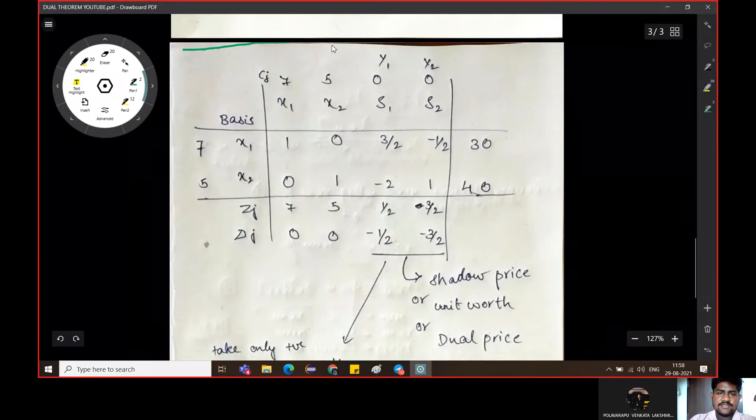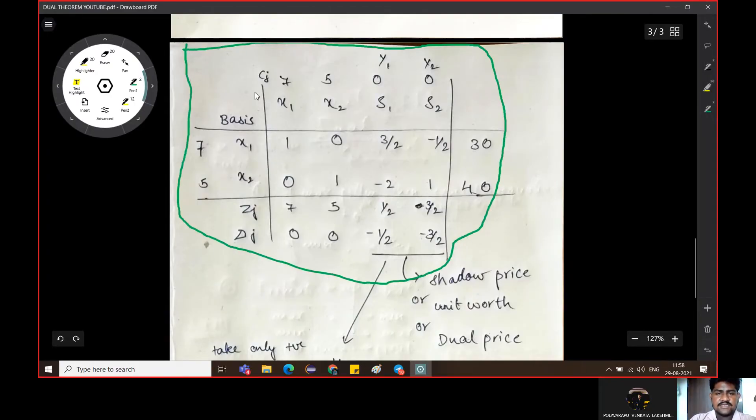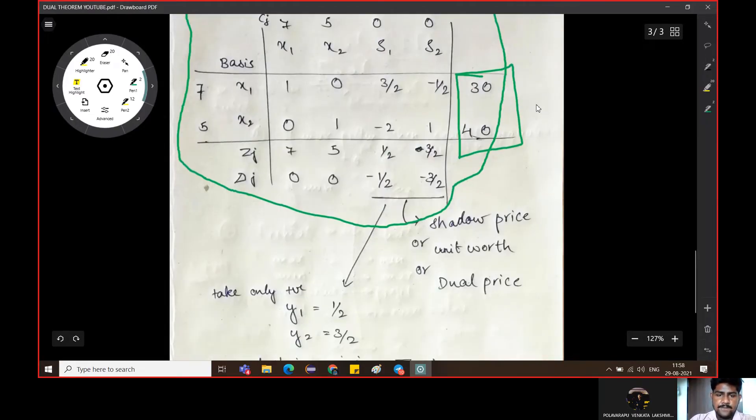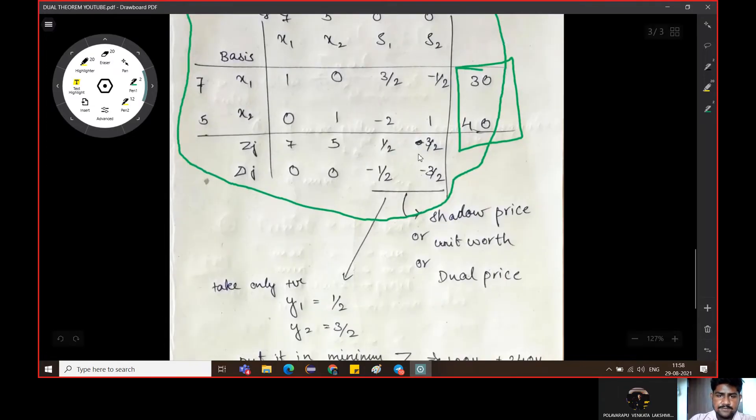This is my last video simplex method used to solve. This is the table for the last iteration. And solutions are 30 and 40, optimal solutions. Now if you want to see this, this 7 and 5 initials are 0. And if you want to see this initial value, there are values minus 1 by 2 and minus 3 by 2.